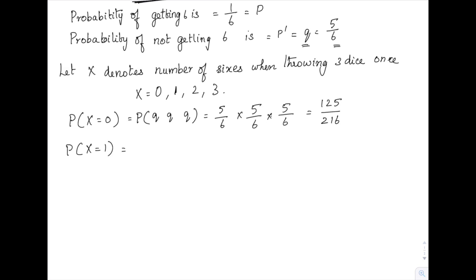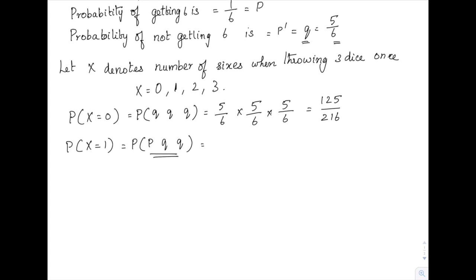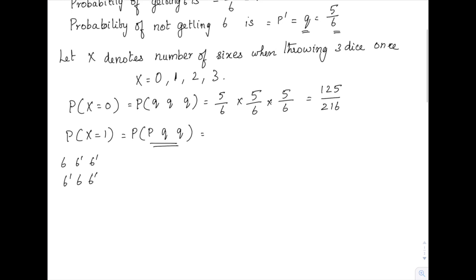The next possibility is P(X = 1), meaning only one six. That means we have one p and two q's — p, q, q — and this can be in any order: six then non-six then non-six, or non-six then six then non-six, and so on.